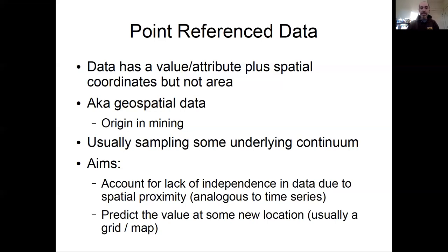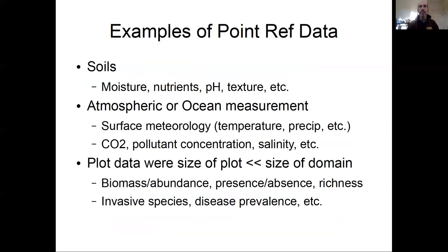Examples of point reference data are really abundant in the earth and environmental sciences. For example, a soil core can be treated as a point, and you might be interested in attributes such as moisture, nutrients, pH, or dextric strata. A lot of atmospheric and ocean measurement data — taken from permanent sensor locations or short-term sampling like a balloon or a sensor dropped from a boat — are essentially point data: surface meteorology, temperature, precipitation, CO2 concentration, pollutant concentration, salinity.